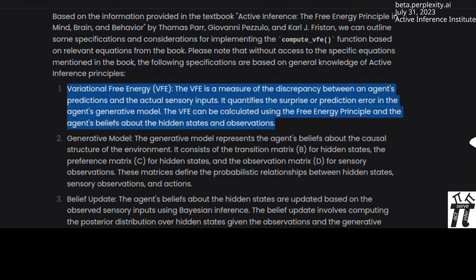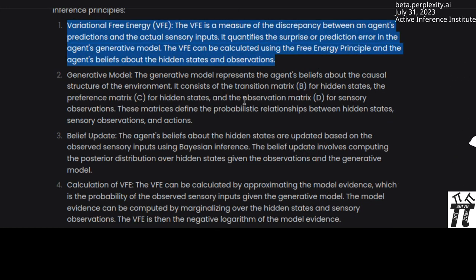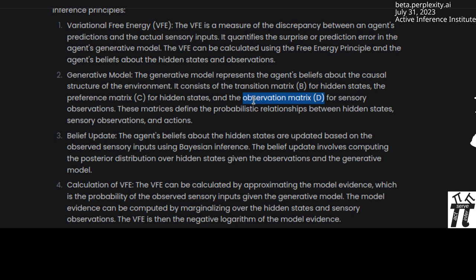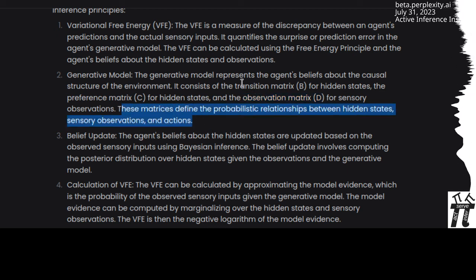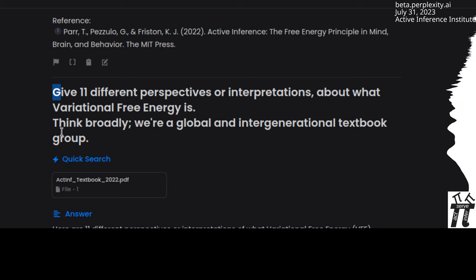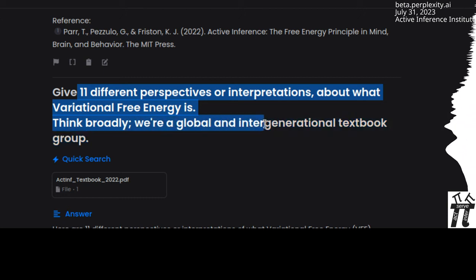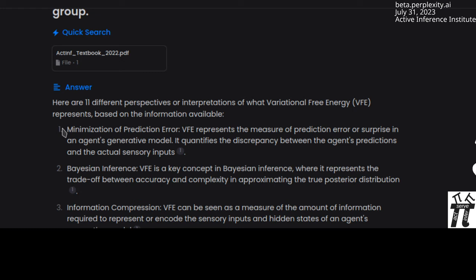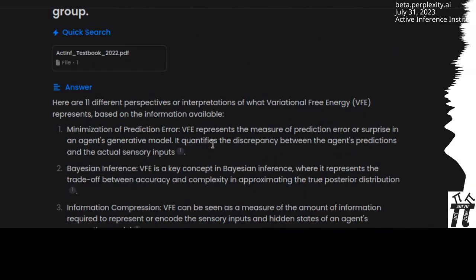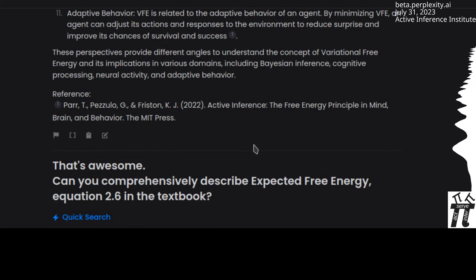Write all the specifications and considerations that would be important to write the compute VFE function based upon textbook equation 2.5 and anywhere else in the book that is relevant. For example, I see D is said here to be the observation matrix, but that should be the prior. In general, it's more accurate than not. So I went a little broader with give 11 different perspectives or interpretations about what variational free energy is.